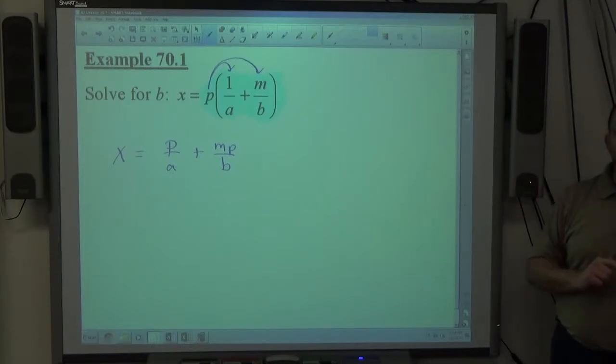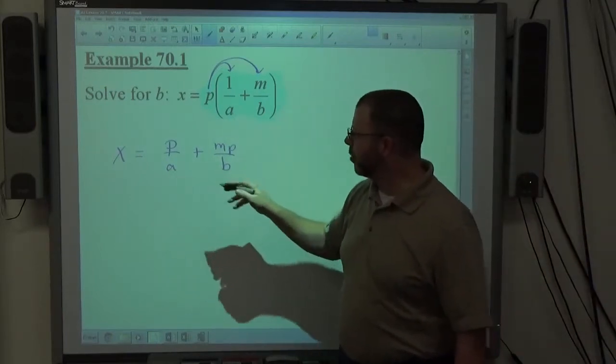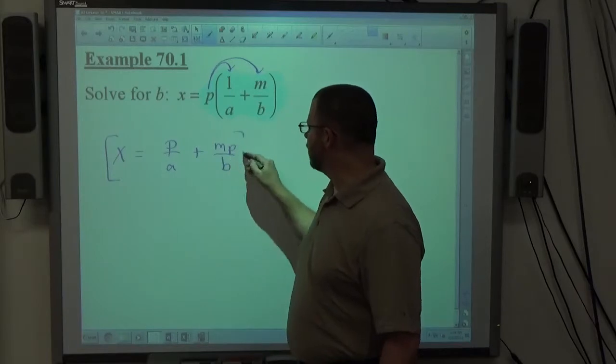Once you get rid of parentheses, the next most common thing that causes students to get wrong answers is fractions. So we want fractions to just disappear. And the least common denominator of the fractions in this problem is going to be AB. So multiply everything by AB to make fractions go away.